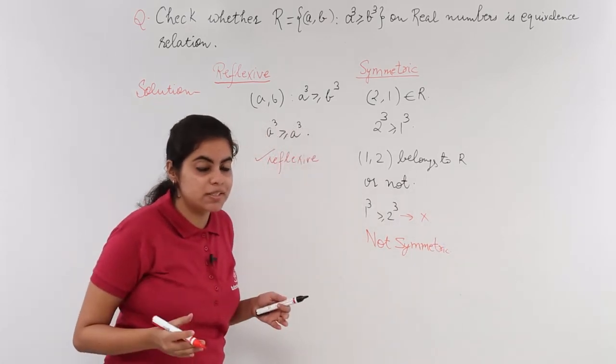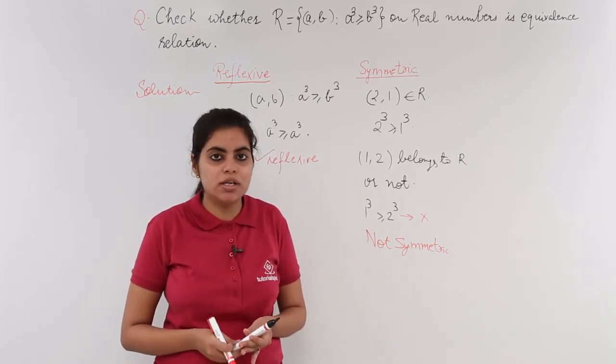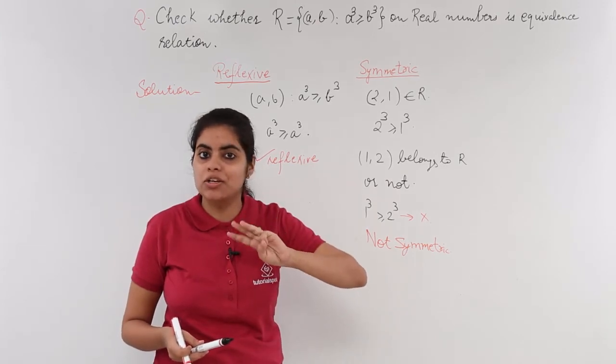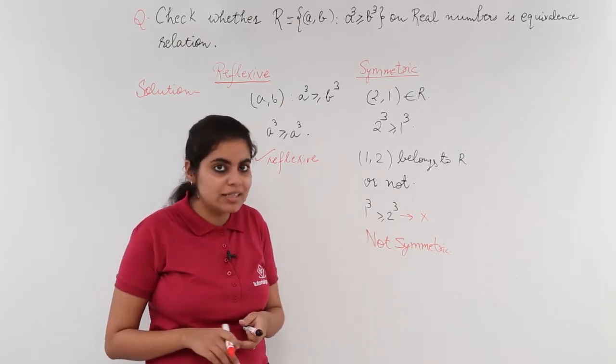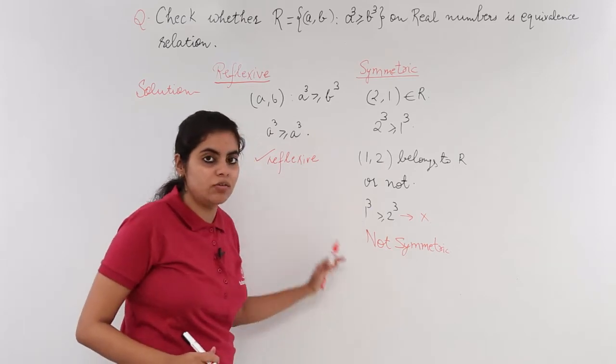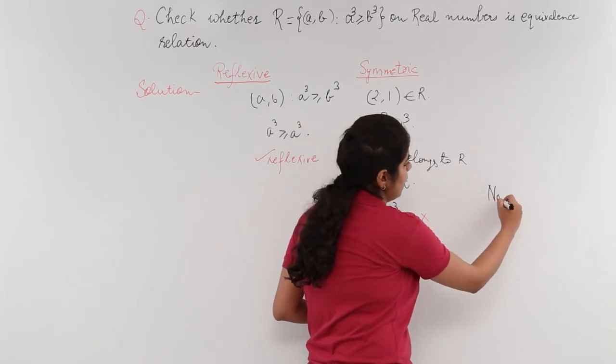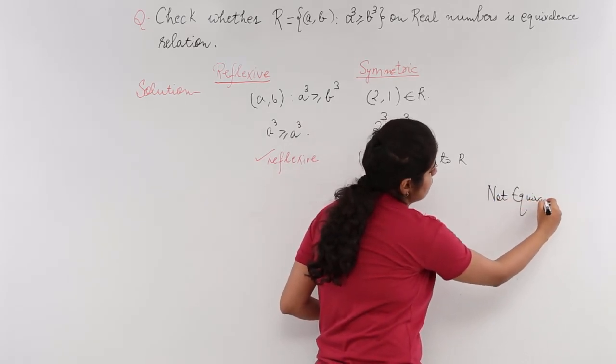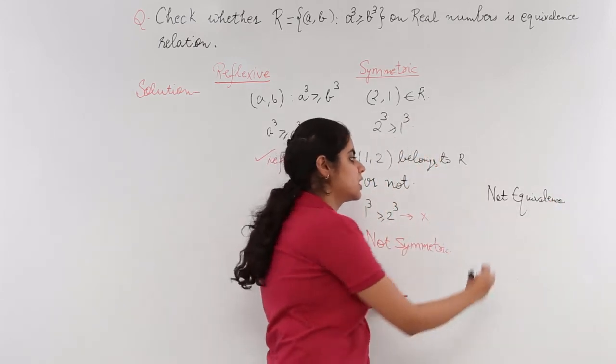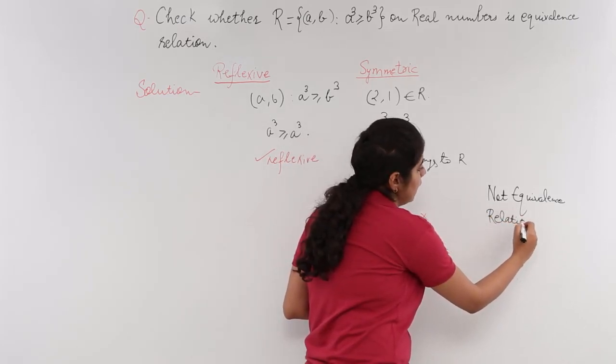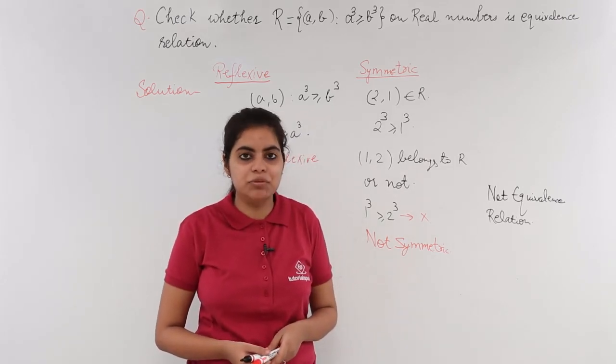Since it is reflexive but not symmetric, I do not need to check whether it is transitive or not. Because all three—reflexive, symmetric, and transitive—have to be followed for the presence of equivalence relation. I can easily say that this relation is not an equivalence relation. Why? Because it was reflexive but it wasn't symmetric. So why do I need to waste my effort and time for transitive? So this was the third sample problem on equivalence relations.